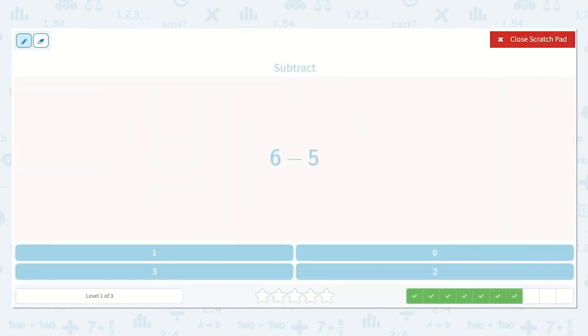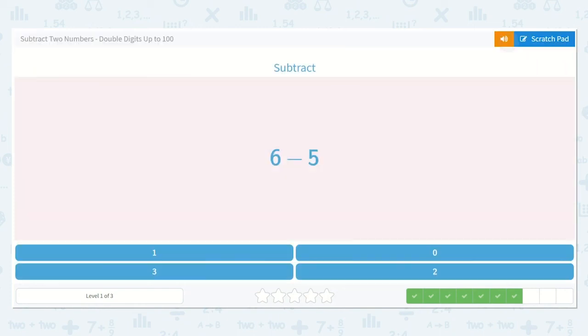Now we have 6 minus 5. 1, 2, 3, 4, 5, 6. And we would take 5 of them away or cross 5 of them off. 1, 2, 3, 4, 5. We are left with 1. So 6 minus 5 is equal to 1.